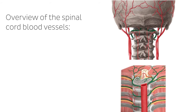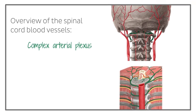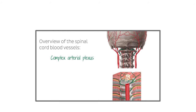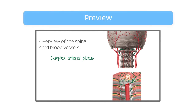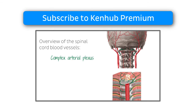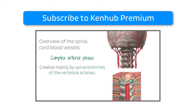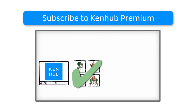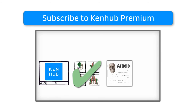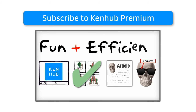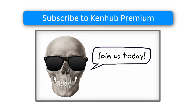You may observe in both images that the spinal cord is surrounded by a complex arterial network. As you can see, this video is a preview which is reserved to Kenhub Premium Members. Why not become one today? As a Premium Member, you will get access to this video as well as other videos, quizzes, articles and our Atlas of Human Anatomy — everything you need to learn anatomy in the most fun and efficient way. Join us and let's continue learning together.